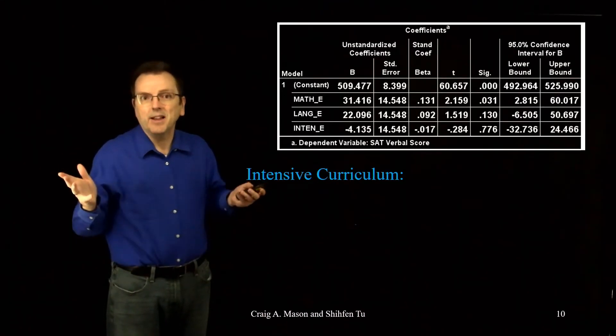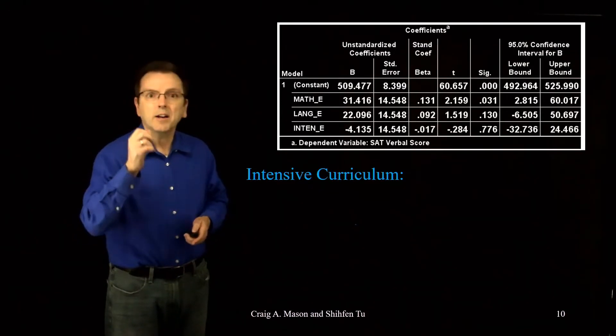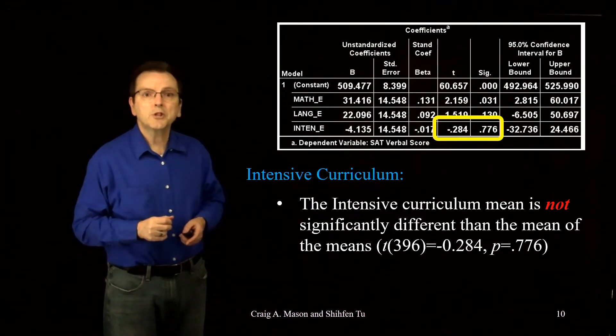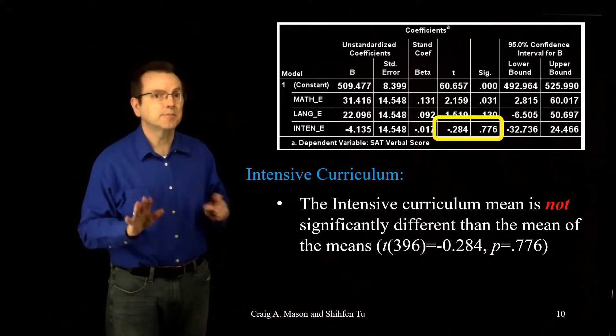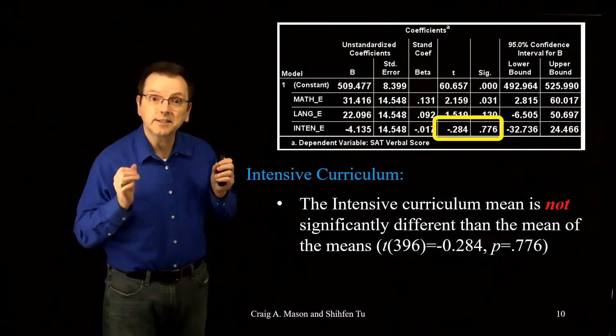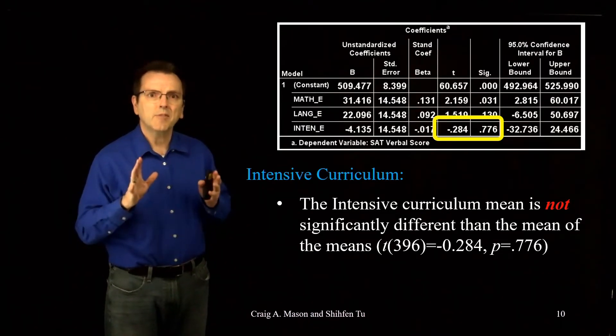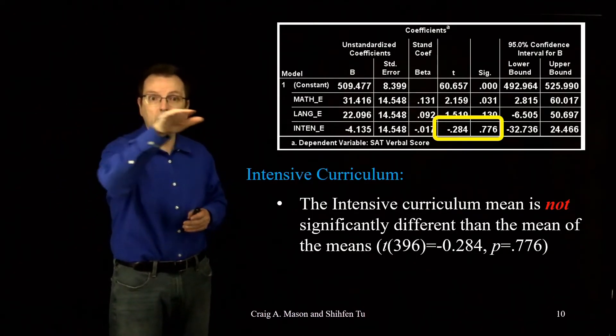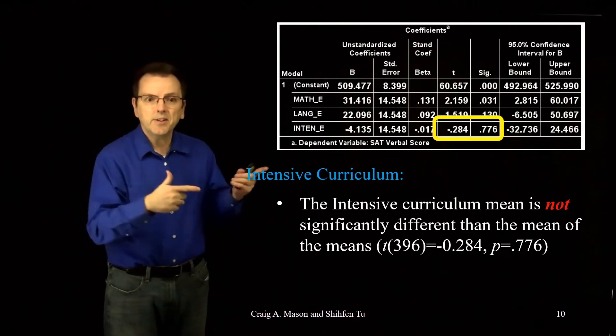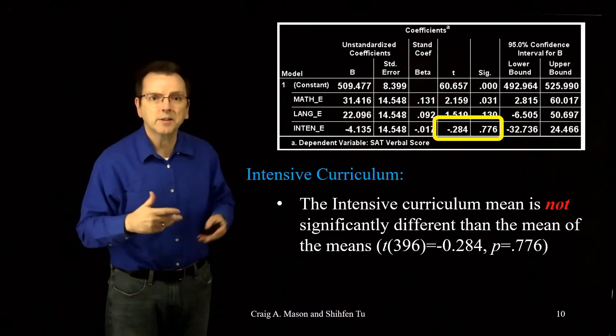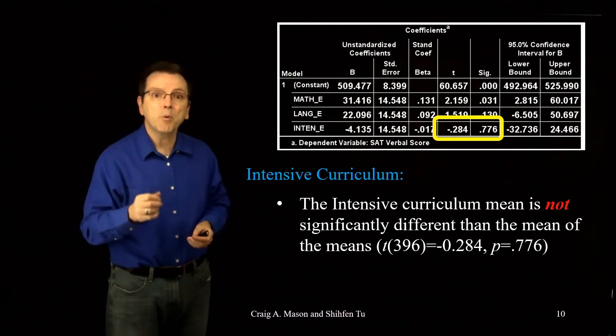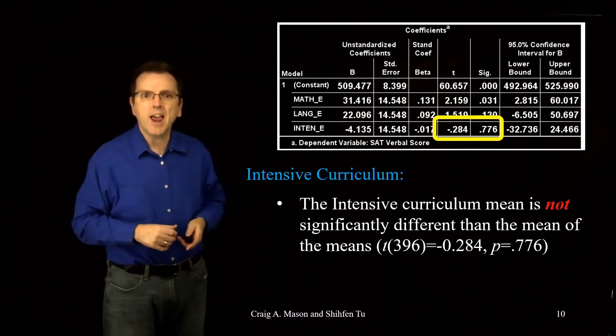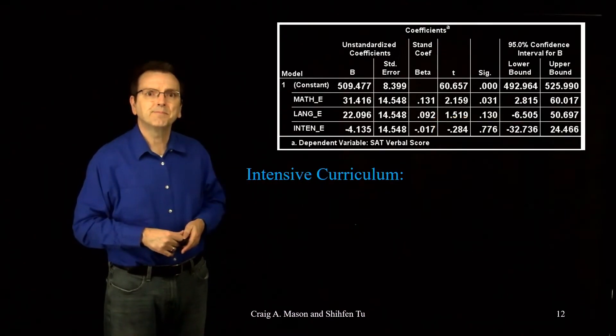Now, in fact, that's exactly what the t-test suggests, doesn't it? Our t with 396 degrees of freedom was equal to negative .284, which gave us a p-value of .776. No statistically significant difference. In other words, if the mean for the intensive curriculum in the population was exactly the same as the mean of all of the means in the population, 77.6% of the time we would have just randomly got a difference of 4.135 points or more in our sample. So, that could just easily be some chance variation, couldn't it?